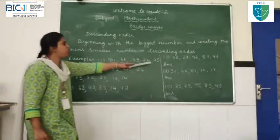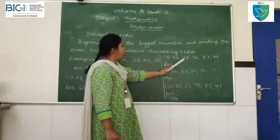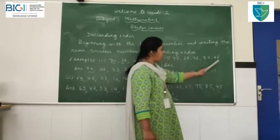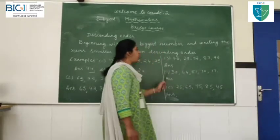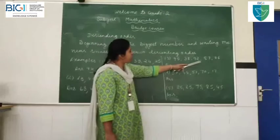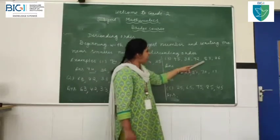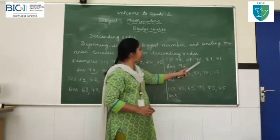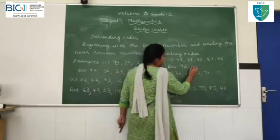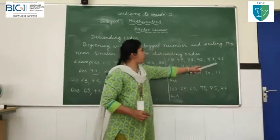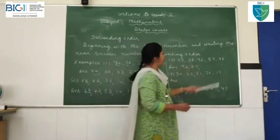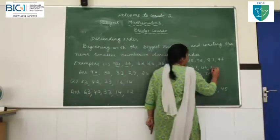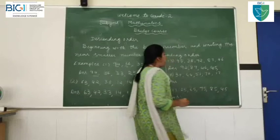Did you understand, children? Now, I am going to the next example. Third example: 45, 38, 92, 87, 46. Now, which is the first biggest number in this? 92 is the first biggest number. Then next smallest number than 92: 87. Next smallest number: 46. Next, smaller than 46: 45. Smaller than 45: 38.